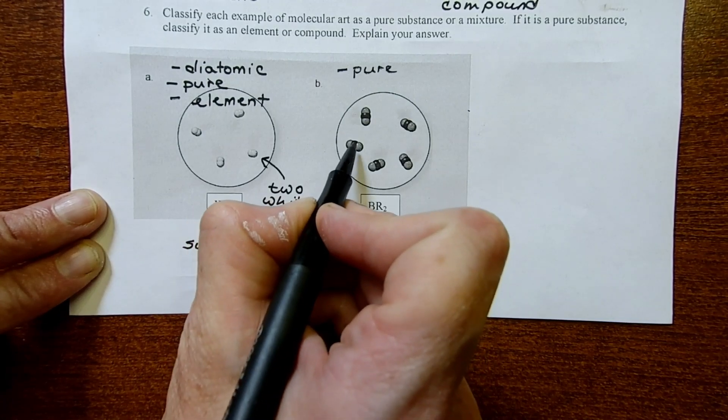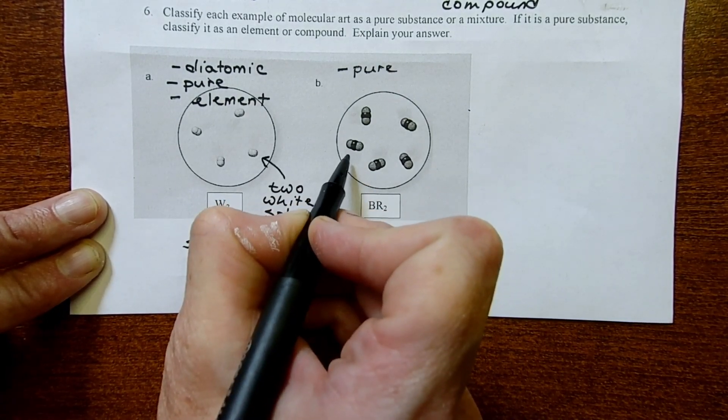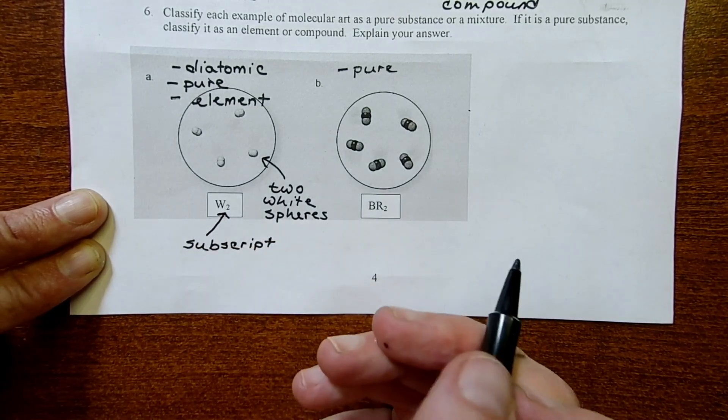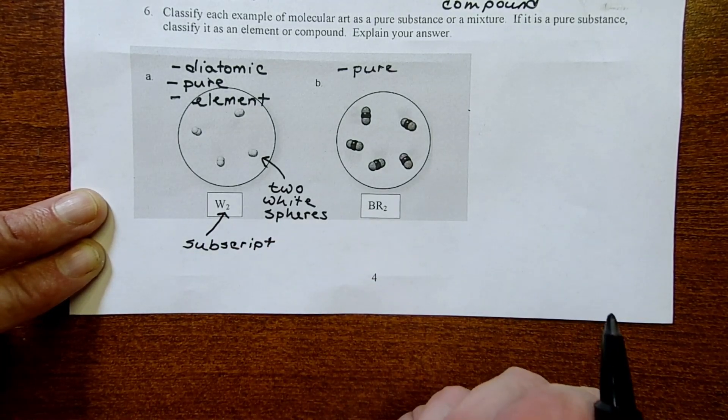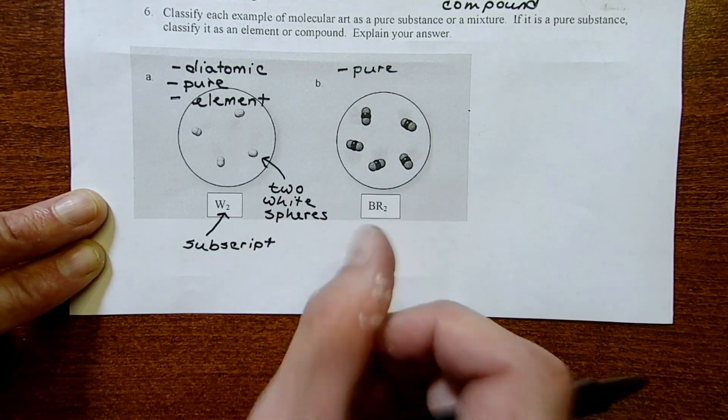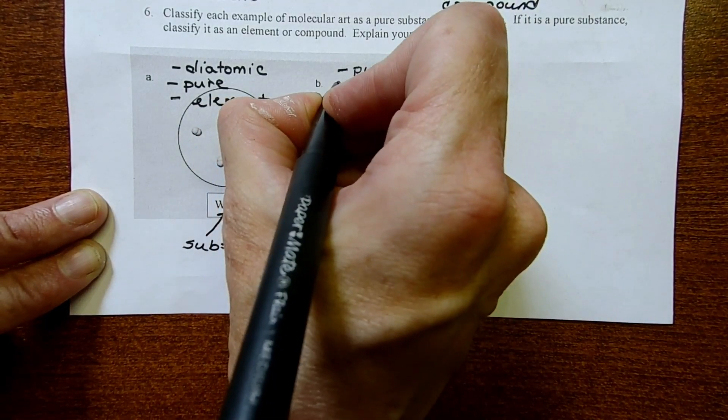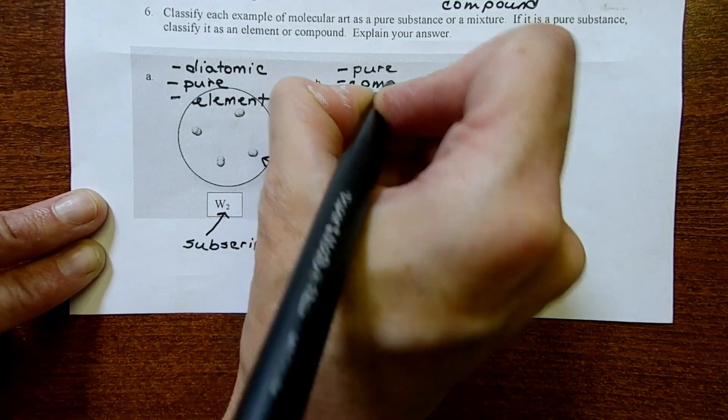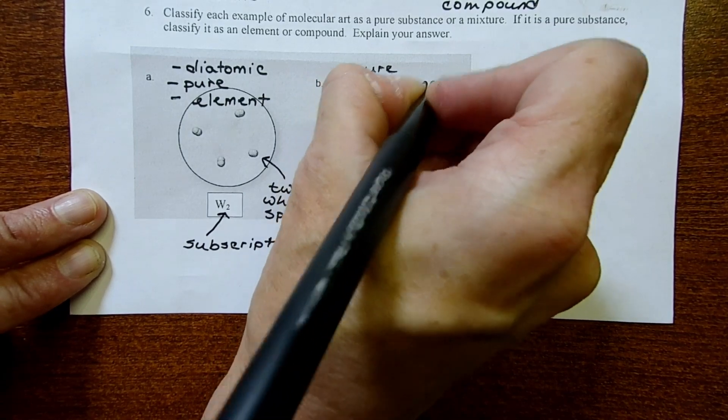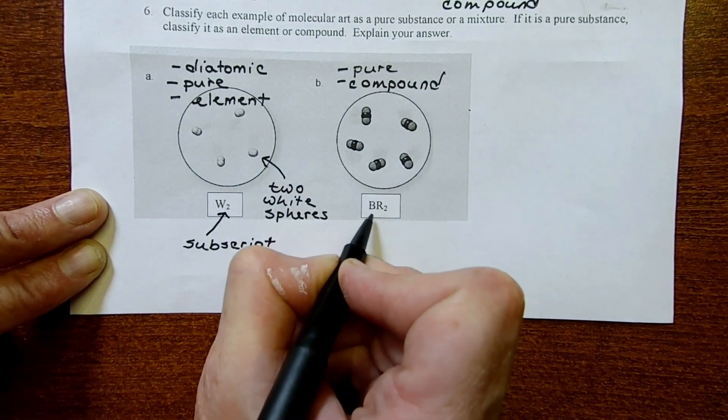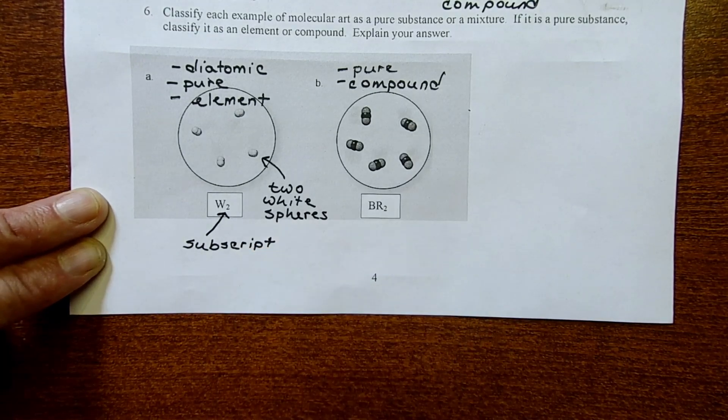This is pure. However, we could imagine breaking down this pure thing. We can maybe separate the black spheres from the red spheres. Because we can break it down and form new combinations or single elements, we're going to call this a compound. The other big indication that it's a compound is because you have different colors or different elements, different letters or symbols.